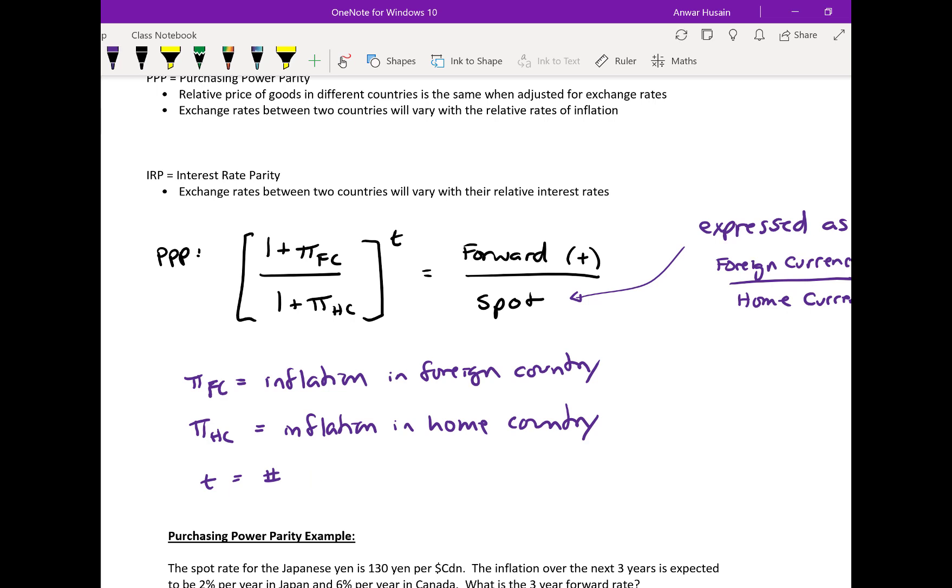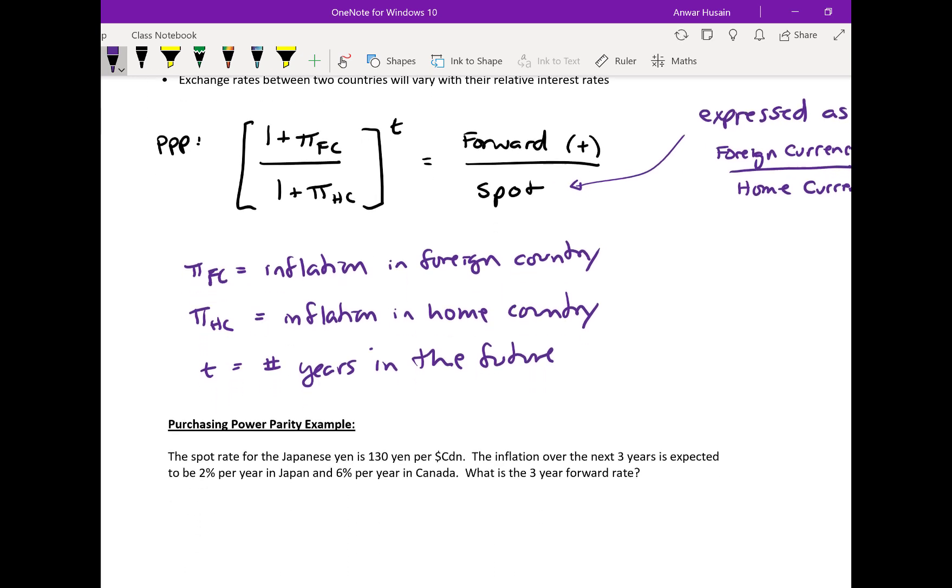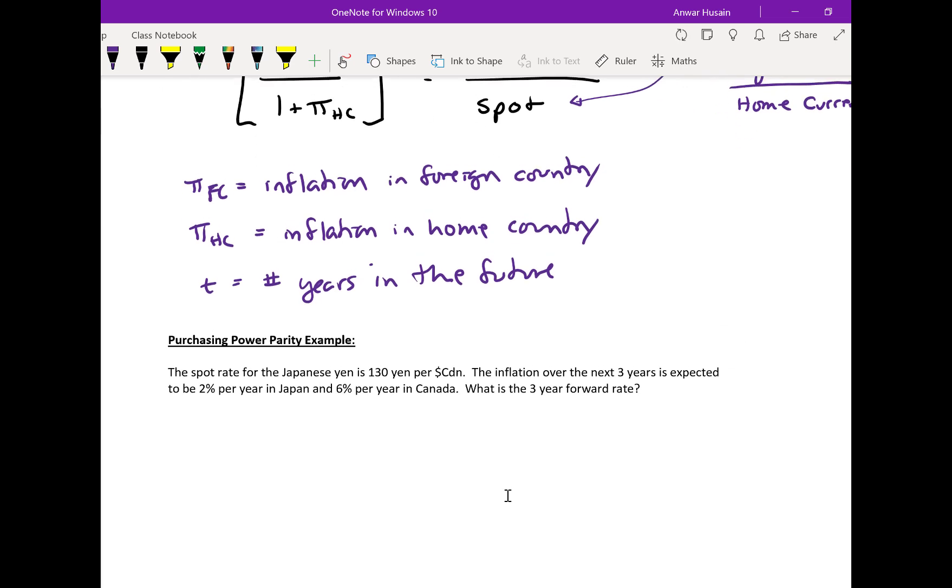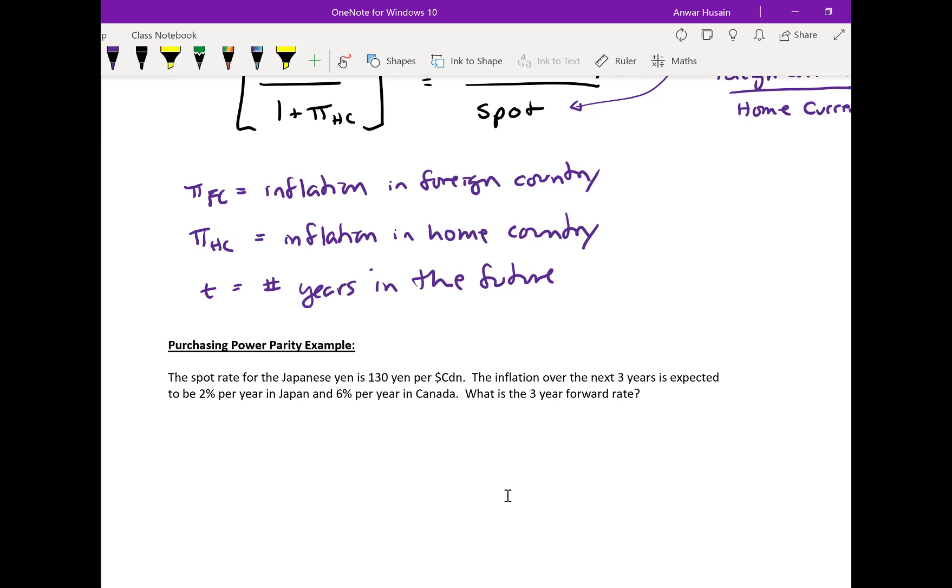So what we're trying to find out is what's the forward rate going to be in the future. Let's illustrate this with an example. The spot rate for the Japanese yen is 130 yen per dollar Canadian. The inflation rate is going to be, over the next three years, 2% in Japan and 6% per year in Canada. What's the three-year forward rate? Let's go over what some of these key factors are. The first one is Canada is the home country, and Japan will be the foreign country in this example.